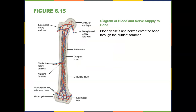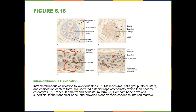Here's a good diagram of blood and nerve supply to the bone. You have articular cartilage, epiphyseal arteries and veins, the periosteum, compact bone, the medullary cavity, and the epiphyseal line. This vast blood supply contributes to bones healing at a relatively quick rate.